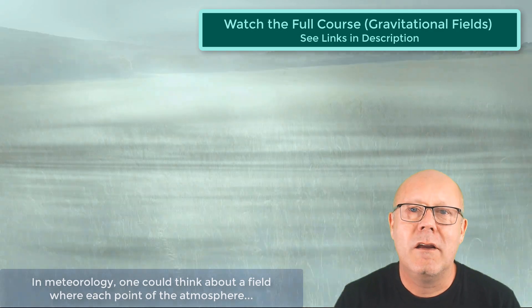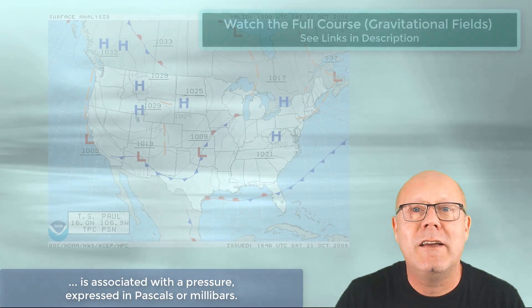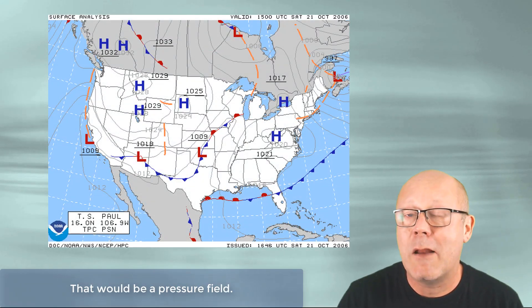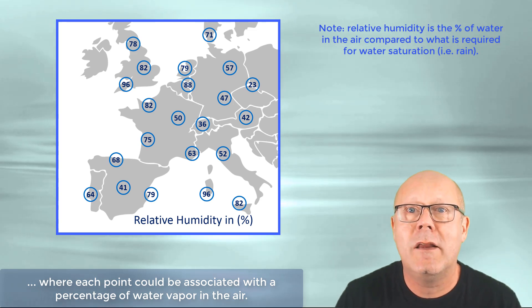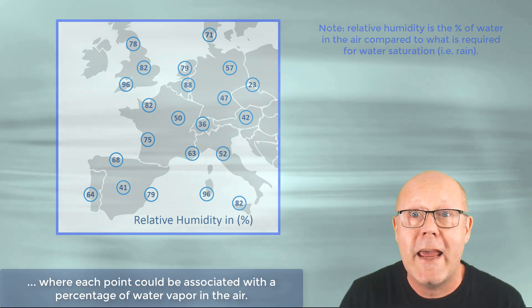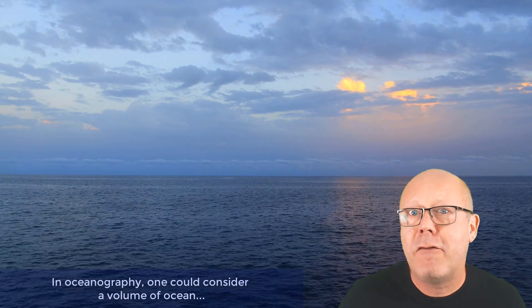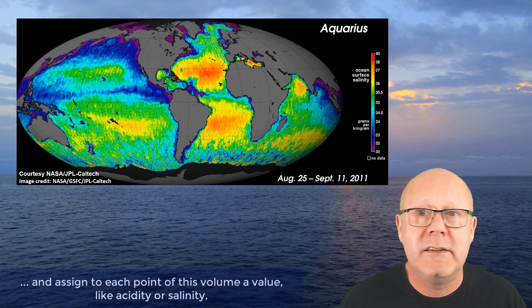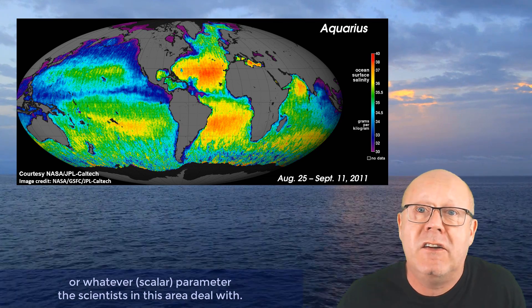In meteorology, one could think about a field where each point of the atmosphere is associated with a pressure, expressed in pascals or millibars. That would be a pressure field. One could also imagine a humidity field, where each point would be associated with a percentage of water vapour in the air. In oceanography, one could consider a volume of ocean, and assign to each point of this volume a value, like acidity or salinity, or whatever parameter scientists in this area deal with.